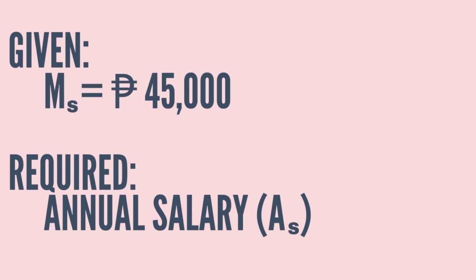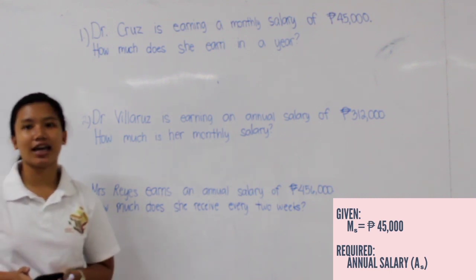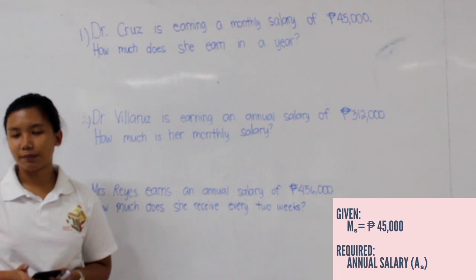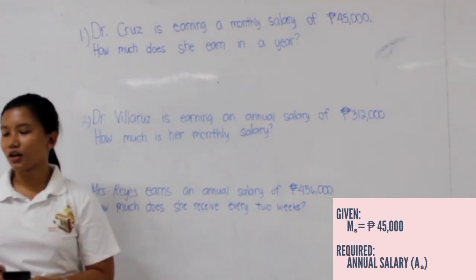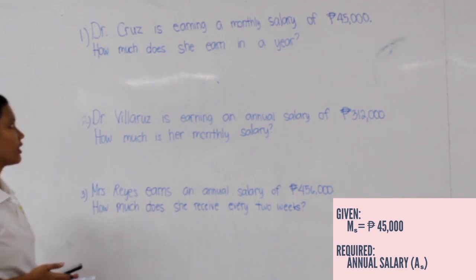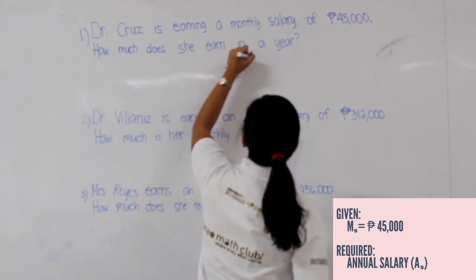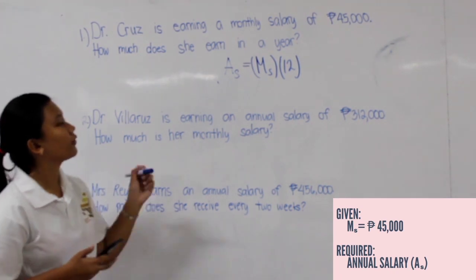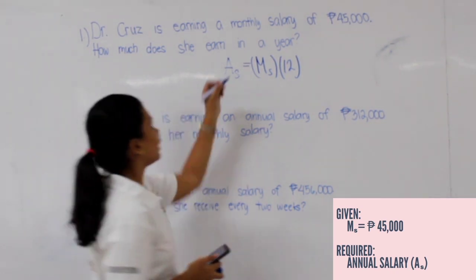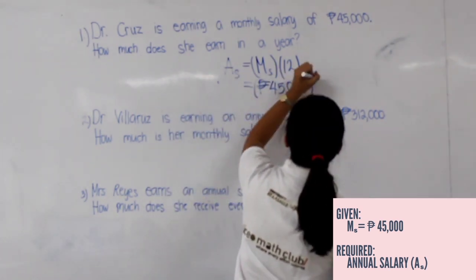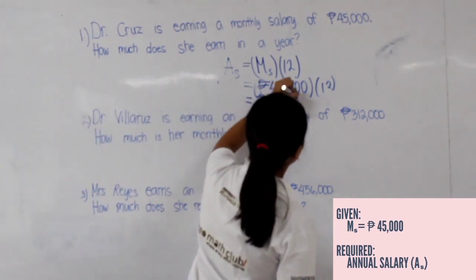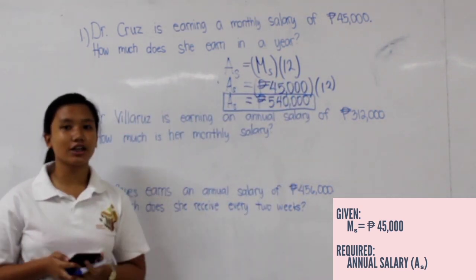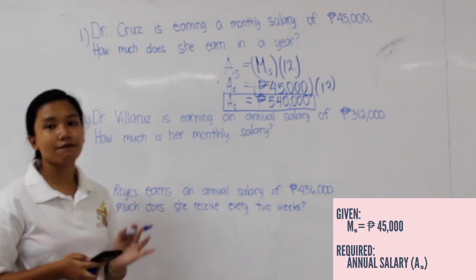With that problem, the given is monthly salary (M sub S) equal to 45,000 pesos, and the required is annual salary (A sub S). We are going to use the formula: annual salary is equal to monthly salary times 12. Substituting the given, we get an answer of 540,000 pesos. So, Dr. Bruce is earning 540,000 pesos annually.